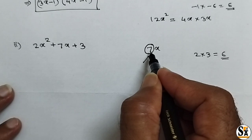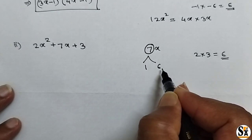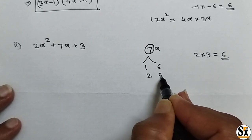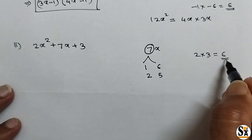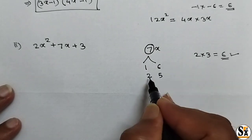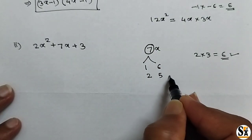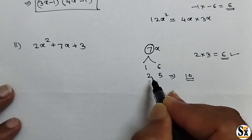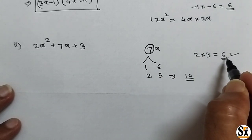Which are the factors? 7 can be written as 1 plus 6. Multiplication of 1 into 6 is 6, which satisfies our condition. Also, 2 plus 5 is 7, but multiplication is 10, so those factors do not satisfy our condition. Only 1 and 6 satisfy both conditions. So we split 7x as 1x plus 6x.